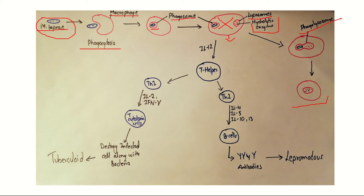The infected macrophage calls for help by producing cytokines such as interleukin-12, which activates T helper cells. This step is very important because it determines the outcome of the disease — whether the disease will be mild or severe, and whether the host immune response will be strong or weak. There are two types of T helper cells: Th1 and Th2, and which type is activated determines how the body reacts.